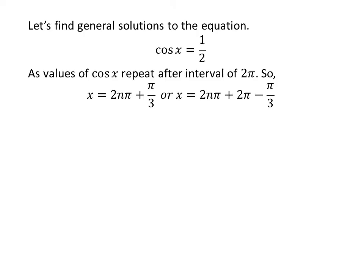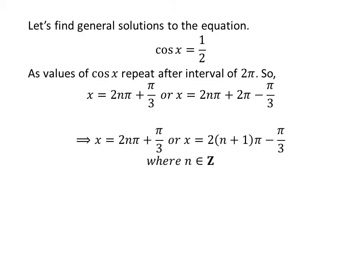Let us find the general solutions for the equation cosine of x is equal to half. Since the values of cosine of x repeat after the interval of two times pi, the general solutions are two times n times pi plus pi upon three, and two times n times pi plus two times pi minus pi upon three, where n is an integer. Further simplification gives the general solutions as two times n times pi plus pi upon three and two times n plus one times pi minus pi upon three.